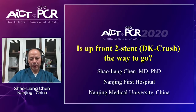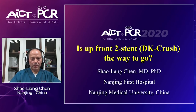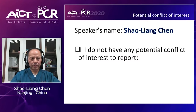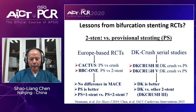Thank you, Professor Huang for the invitation. Slightly changing the topic of my presentation to 'Is upfront two-stent DK CRUSH the way to go?' So far, there are only four randomized clinical trials comparing different stenting techniques for coronary bifurcation lesions. These four clinical trials compared provisional with two-stent technique for bifurcation lesions — two came from Europe and two came from our DK CRUSH serial trial team.